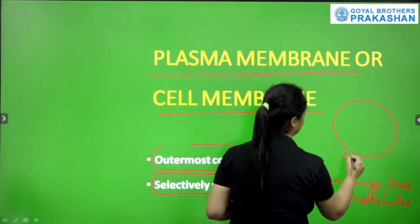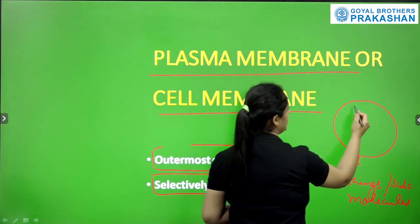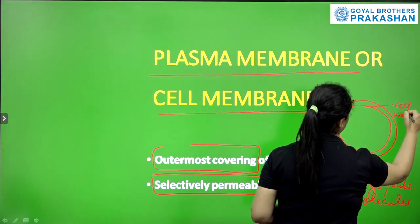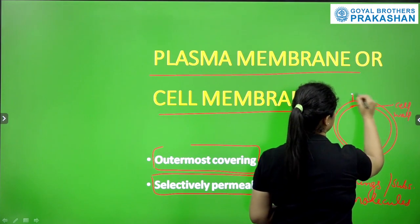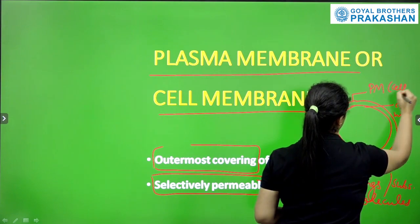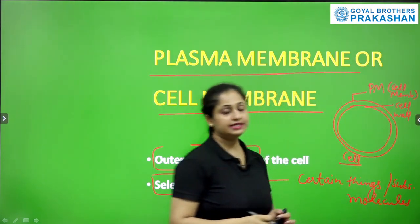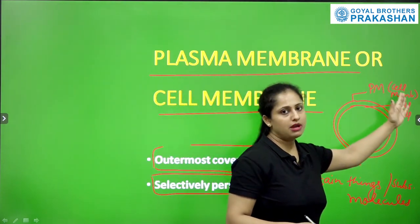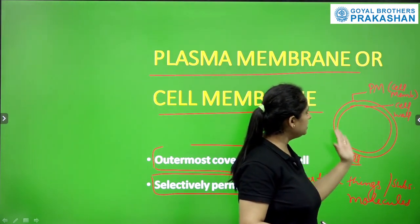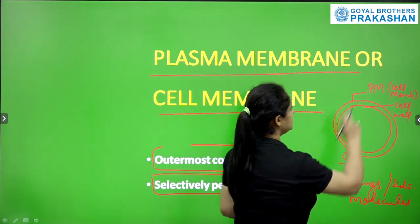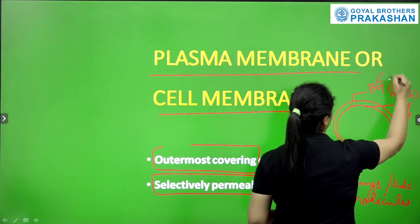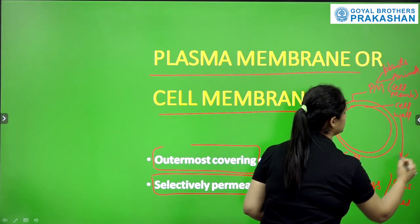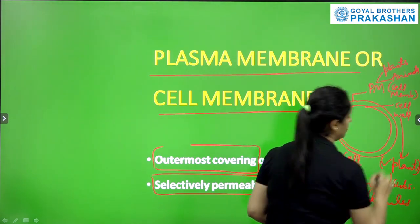This is the structure or outline of a cell. Inside this membrane is another membrane or wall, known as the cell wall. Outside of the cell wall is the plasma membrane or cell membrane. Plasma membrane and cell wall are two different things. The cell membrane or plasma membrane is present in both plants and animals, while the cell wall is only present in plant cells, not in animal cells.